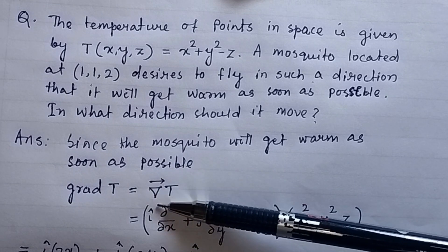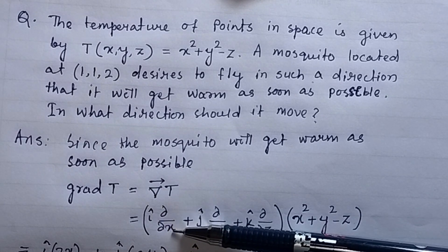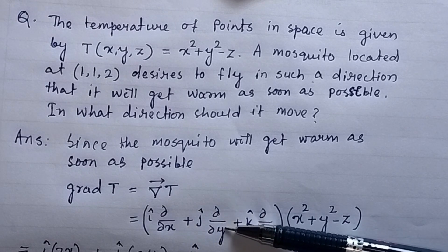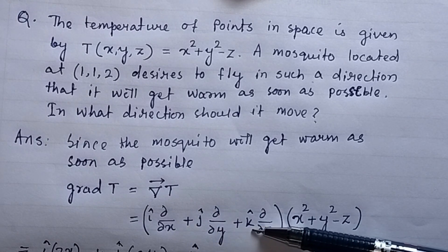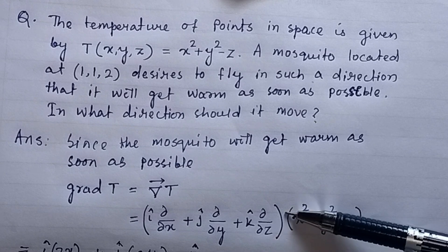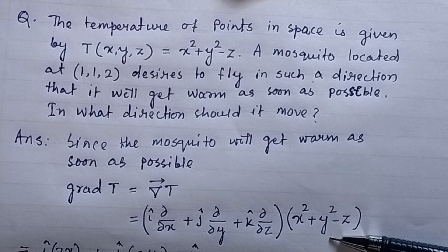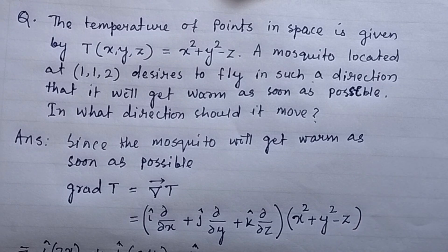We know the del operator can be written as i-cap partial derivative with respect to x, plus j-cap partial derivative with respect to y, plus k-cap partial derivative with respect to z, of the scalar function — that is the temperature T, which is equal to x squared plus y squared minus z.